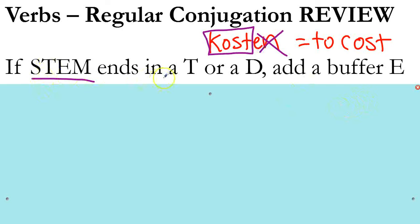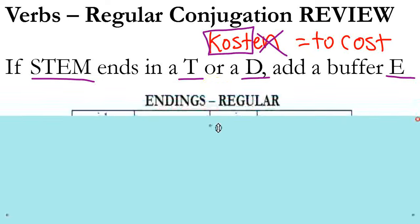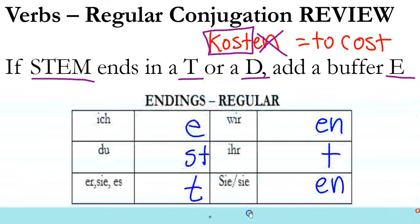If the stem ends in a T or a D, you need to add a buffer E, meaning when it's time to conjugate I'll show you what happens there. So these are the endings: we call it E, ST, T, EN, T, EN - ich/du/er-sie-es/wir/ihr/Sie-sie.